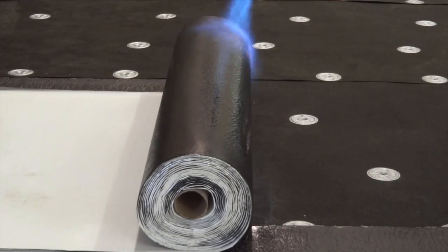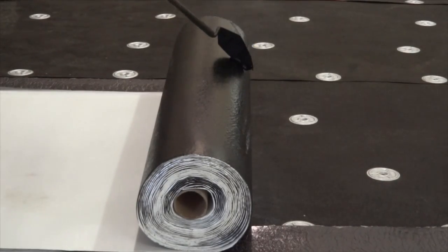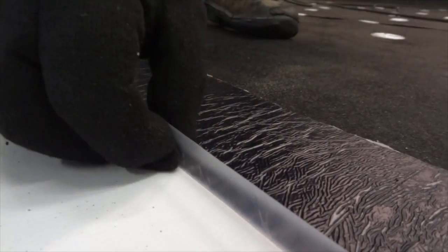If the membrane produces a heavy smoke, this means too much heat is being applied. Be sure that the burn off film is completely burned off where present on the underside of rolls, membrane selvage edges, or both surfaces as applicable.